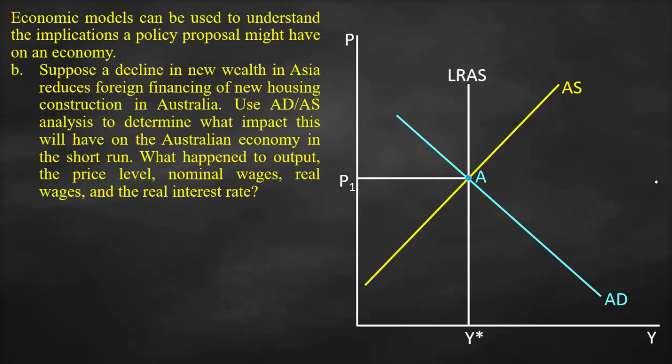The second part of the question: suppose a decline in new wealth in Asia reduces foreign financing of new housing construction in Australia. Using aggregate demand and aggregate supply analysis, we determine what impact this will have on the Australian economy in the short run. This is an example of a negative aggregate demand shock — lower investment consequently results in lower aggregate demand, so aggregate demand shifts to the left.